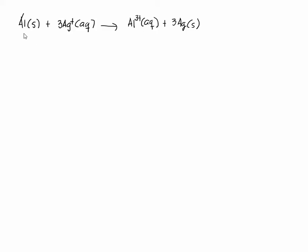Aluminum on the left side is zero. Aluminum on the right side is plus three. Silver on the left side is plus one. Silver on the right side is zero. So aluminum went from zero to positive three. That would be oxidation. Therefore, aluminum is our anode.